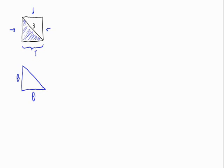So, these two sides are the same, and we have the hypotenuse that is 3. As it is a right triangle, we can apply the Pythagorean theorem. That is: side squared plus side squared equals the hypotenuse squared.